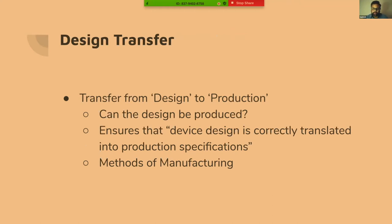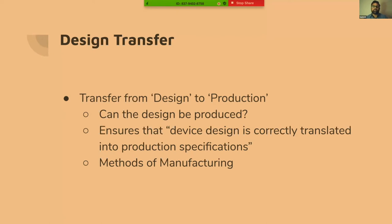Design transfer is when we've gone from user needs through design inputs and outputs — the result of the design process — and now we need to transfer that drawing to be manufactured. Any changes at this point, if they change the form, fit, and function, that's a significant change. If the functionality changes, the performance changes, or how the end user would use it changes, you have to go through the validation process all over again. That's part of the change control process too.